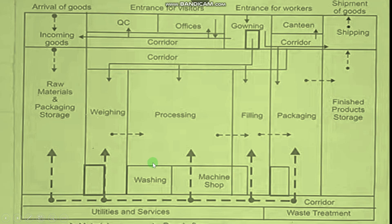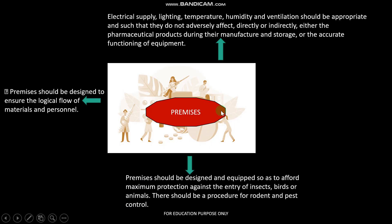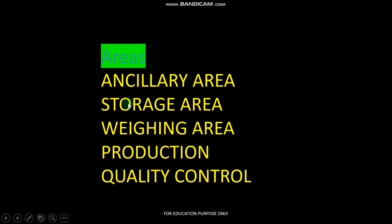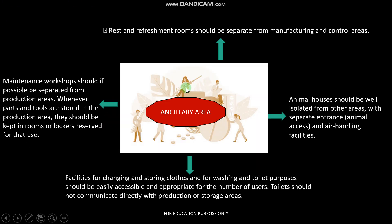You will have some ideas that are necessary in pharmaceutical houses. First, ancillary areas: rest rooms and refreshment rooms should be separate from manufacturing units and control areas. There will be some extra rooms — rest rooms and refreshment rooms — contained in ancillary areas. Animal houses should be well isolated from other areas. If you are in R&D in a pharmaceutical house, animal houses will be separate. Facilities for changing and storing clothes, washing, and toilet facilities should be there in ancillary areas.